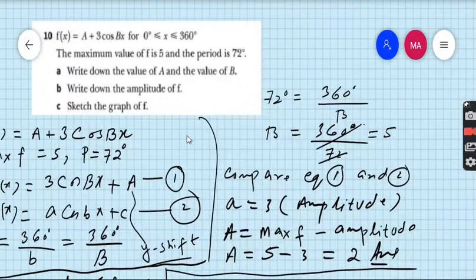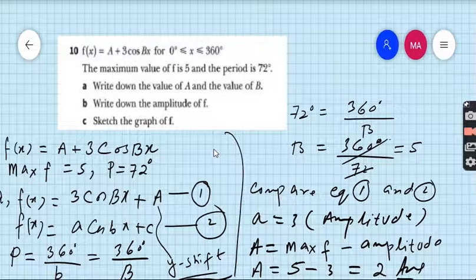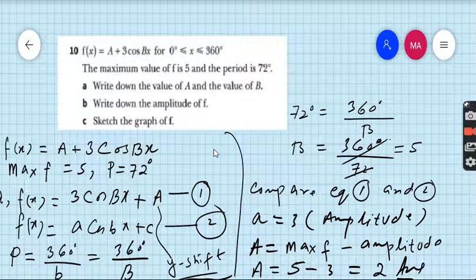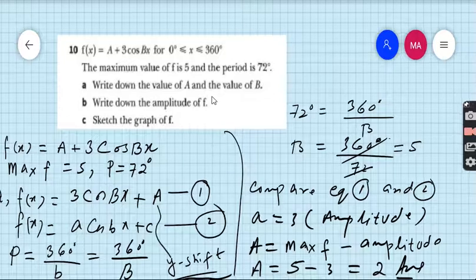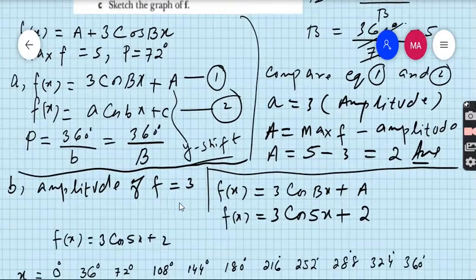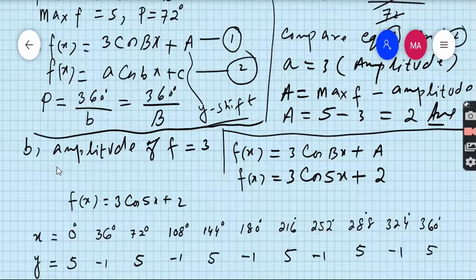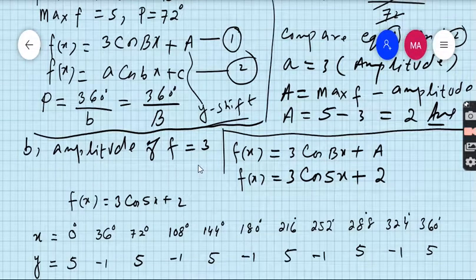What is the requirement of part B? The requirement of part B is write down the amplitude of f. We have already found the amplitude of f. That is A equals 3, so the amplitude of f equals 3.